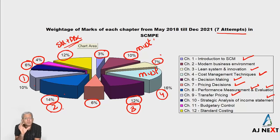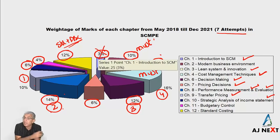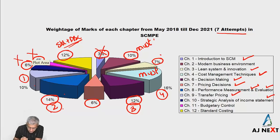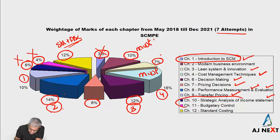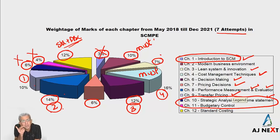So this should give you a small insight into what you can leave if you are short on time. Chapter 1 can be left if you don't have time. Apart from that, Chapter 10 and Chapter 11 find the least importance. So if you want to dedicate your time to the most important topics, focus on all chapters except Chapter 1, Chapter 10, and Chapter 11.